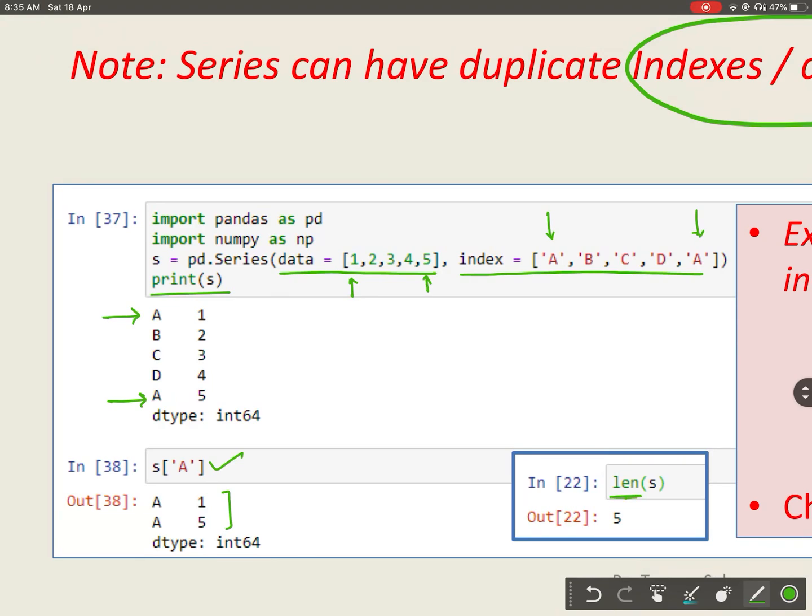If you give length and series object, it will print the length of a series. Since length of series S is five because there are five elements, it is printed as five.